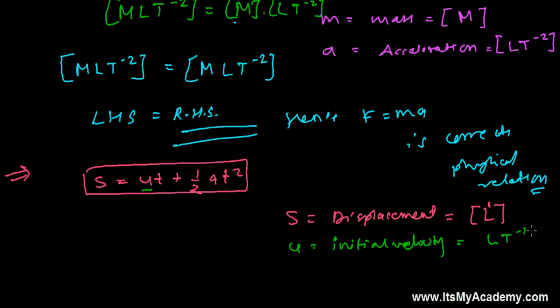A is our acceleration, so we already know the acceleration dimension formula. This T represents your time and the dimension formula of time everybody knows - that's T. So let's put the values of all these physical quantities and check whether this equation is correct or not.